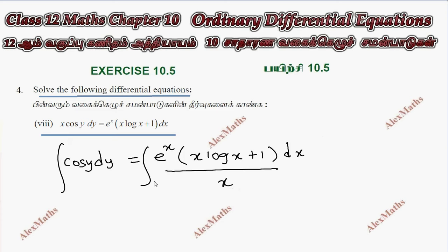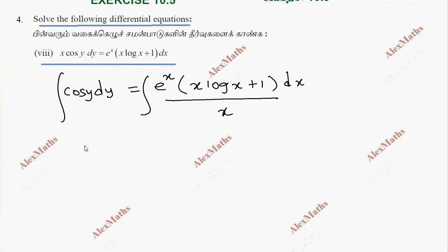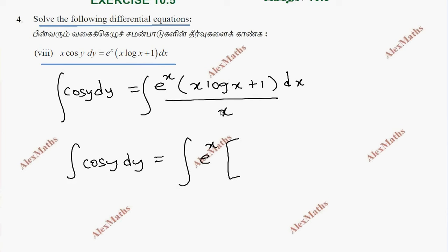This time, cos y dy is an identity. We have e^x divided by x into dx on the other side, setting up the integration.